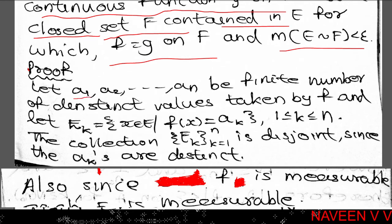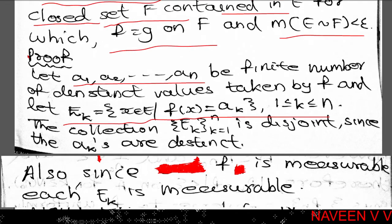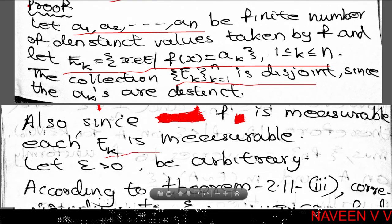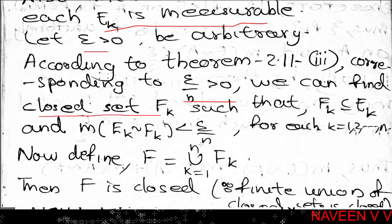F takes the distinct values a1, a2, up to an. Also, let Ek equal the set of all x belonging to E such that F of x equals ak, for all k such that 1 less than or equal to k less than or equal to n. Since function f is measurable, each Ek is a measurable set. Using positive real number epsilon, by Theorem 2.11 third part applied to each Ek, corresponding to epsilon by n greater than 0, we can find a closed set Fk such that Fk is a subset of Ek and measure of Ek minus Fk is less than epsilon by n, for each k equal to 1, 2, 3 up to n.